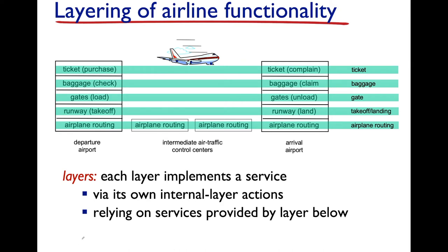Each layer implements a service, and each one of these layers has a set of actions as well as pieces of information that hold meaning to that particular service. The ticket means something on the departure side as well as the arrival side. On the departure side, the ticket identifies that unit of air travel — the seat to which you are entitled. On the arrival side, that ticket corresponds to some service you received, and you can use it to give feedback.